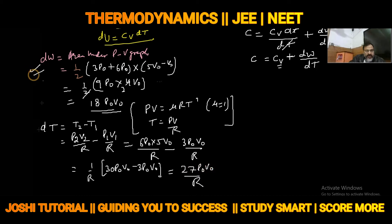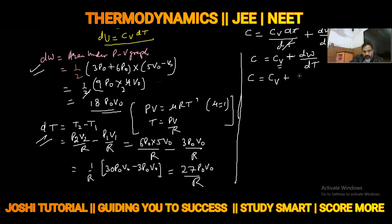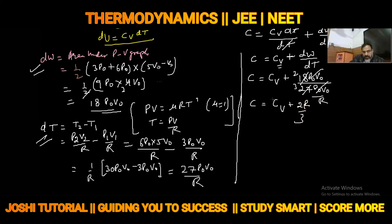So we have solved work done and change in temperature. Putting these values: C = Cv + 18P₀V₀ / (27P₀V₀/R) = Cv + 2R/3. Now we solve Cv for monoatomic gas: Cv = fR/2, where f is degree of freedom. For monoatomic gas, f = 3, so Cv = 3R/2.